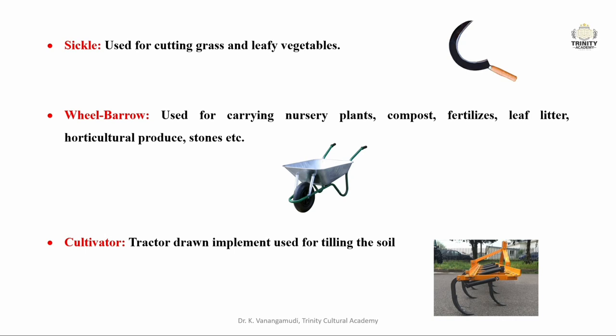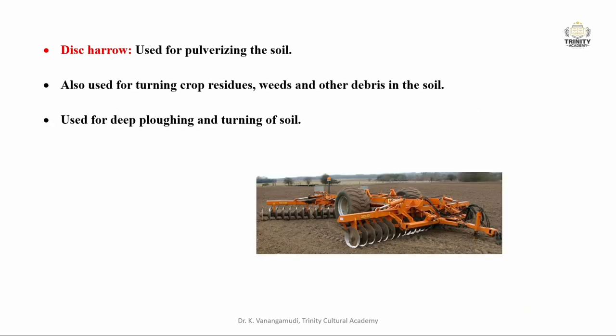Next is the wheelbarrow, a manually operated small trolley used for carrying nursery plants, compost, fertilizers, leaf litter, horticultural produce, and stones from one place to another. The final implement in this section is the cultivator, a tractor-drawn implement used for tilling the soil efficiently. It has tines of quality carbon steel and ploughs up to 0.5 to 1 foot depth.